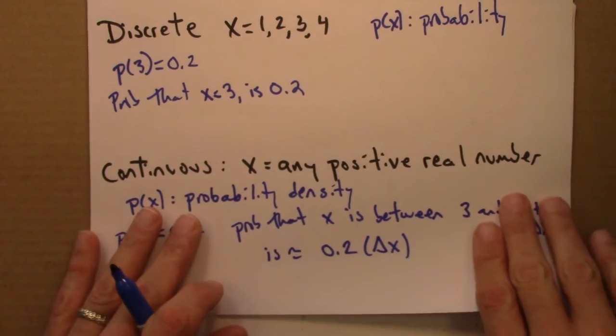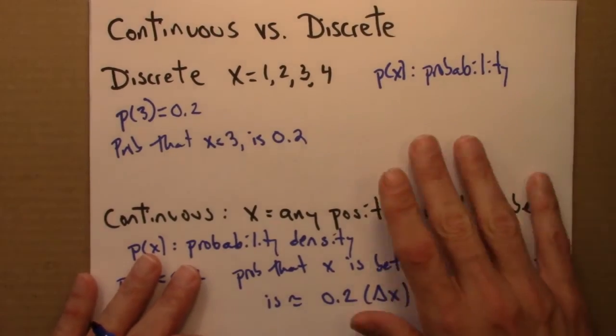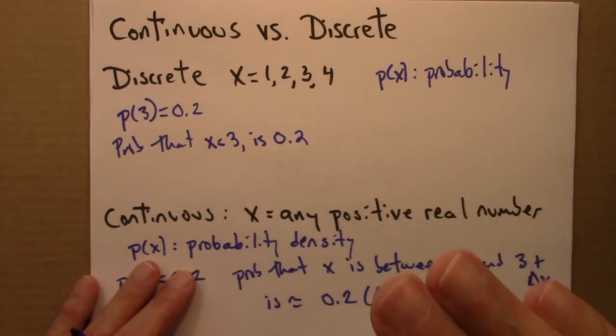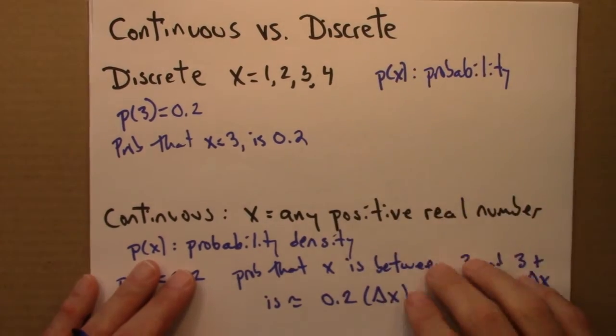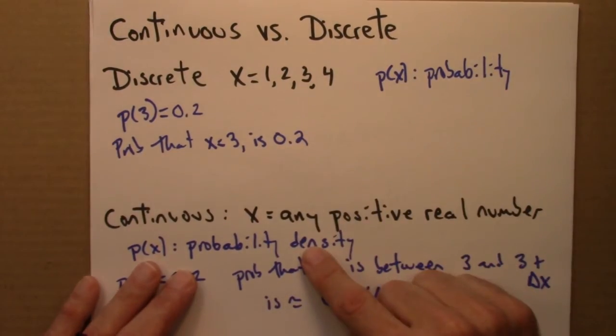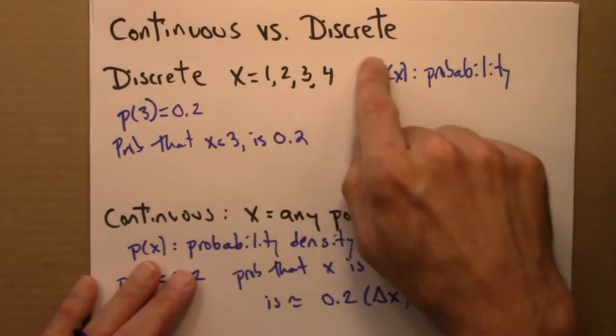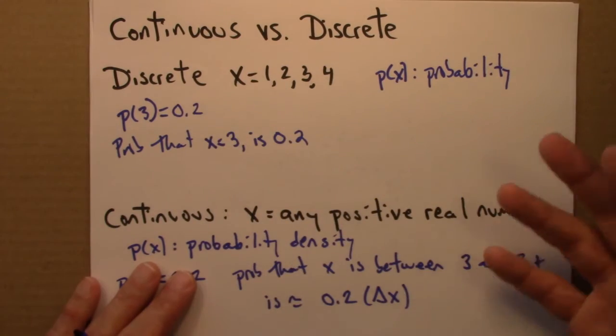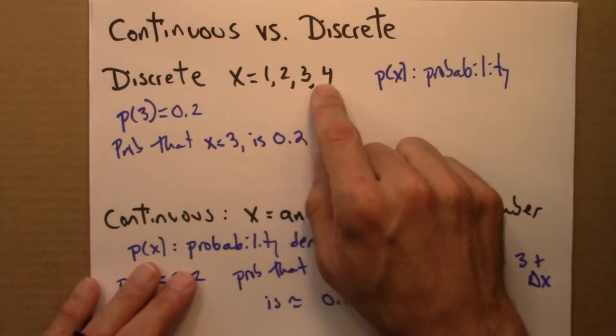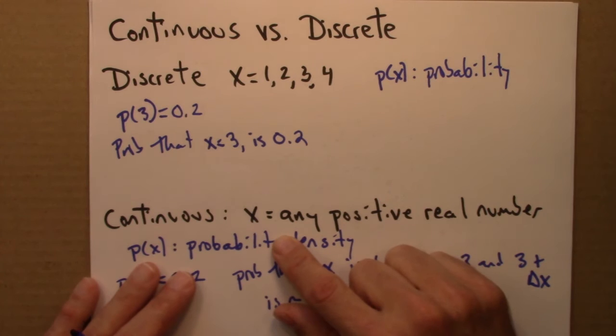So when one is thinking about probability, as we mostly will be in this course at sort of a 10,000-foot level, we don't really need to worry about the difference between these two types of situations. I'll mostly be working with discrete, but the intuition and general lessons that we'll learn apply equally well to these sorts of things.